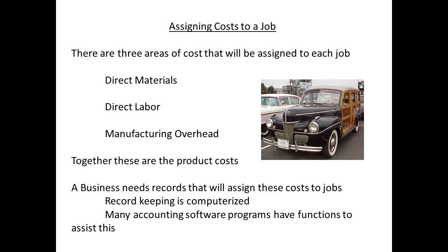Job costing means that costs must be assigned to a job. These costs are usually split into three categories: direct materials, direct labour, and manufacturing overhead. Together, these make up the product costs.